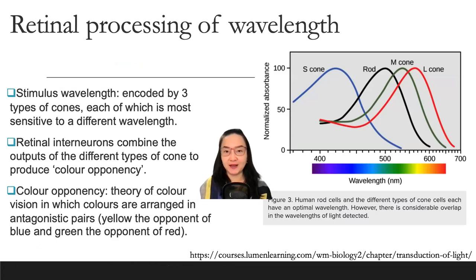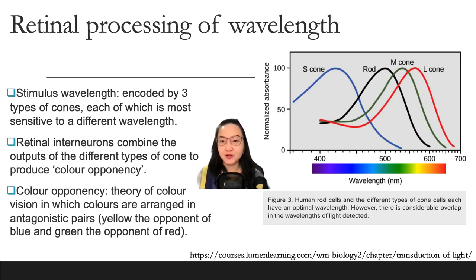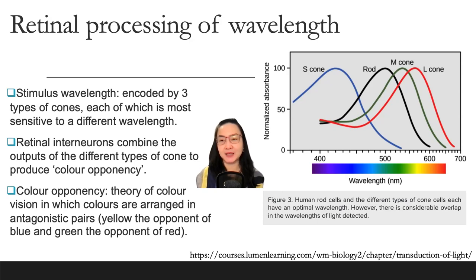Retinal processing of wavelength. Stimulus wavelength is encoded by three types of cones, each most sensitive to a different wavelength. Retinal interneurons combine the outputs of the different cone types to produce color opponency — the theory where colors are arranged in antagonistic pairs. For example, yellow is the opponent of blue and green is the opponent of red. Human rod cells and different cone types each have an optimal wavelength, with considerable overlap. There are S-cones, M-cones, L-cones, and rods.